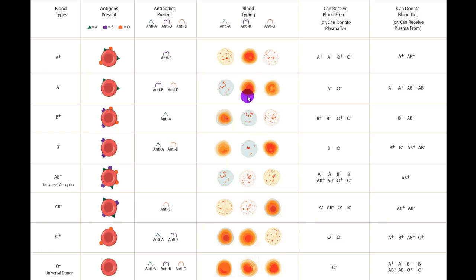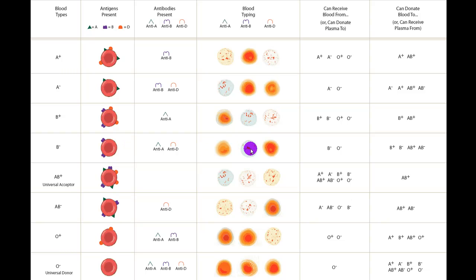You can work through the other blood types yourself. For example, if we put anti-A on someone with B negative blood, there's no A antigen, so there won't be any clumping. Anti-B will find the B antigen and cause agglutination. And anti-D will cause no clumping because there's no D antigen on the outside of that blood cell.